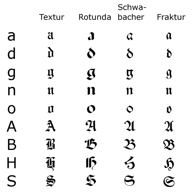Most older Fraktur typefaces make no distinction between the majuscules I and J, where the common shape is more suggestive of an I, even though the minuscules i and j are differentiated. One difference between Fraktur and other blackletter scripts is that in the lower case o, the left part of the bow is broken, but the right part is not.